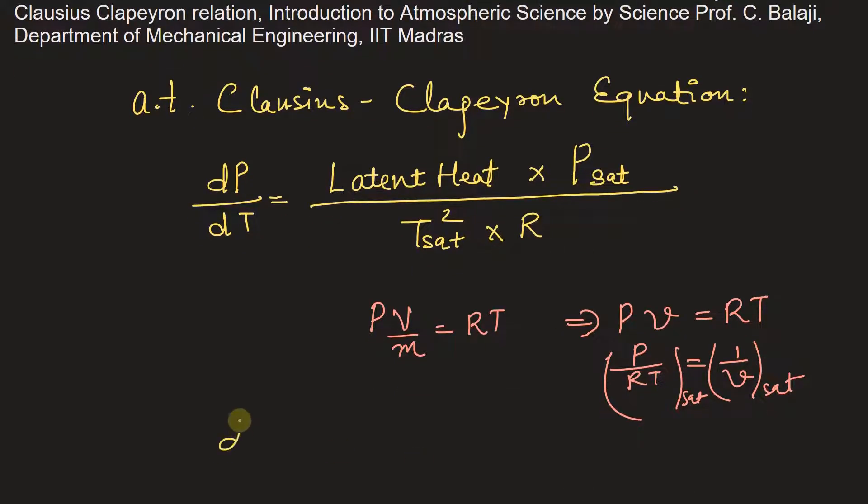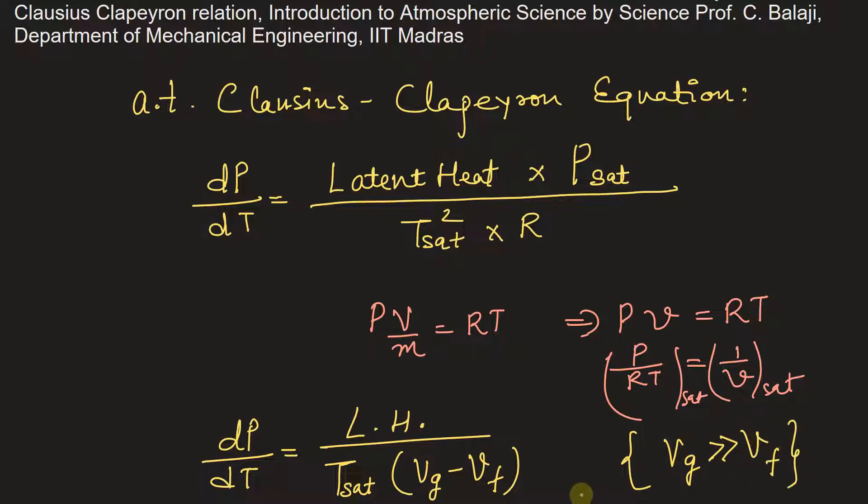We can write dP by dT is equal to latent heat divided by saturation temperature by Vg, specific volume, minus Vf, where Vg is the specific volume of saturated vapor and Vf is the specific volume of saturated liquid. Here Vg must be much greater than that of Vf.